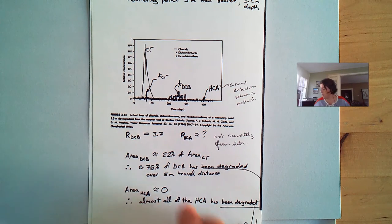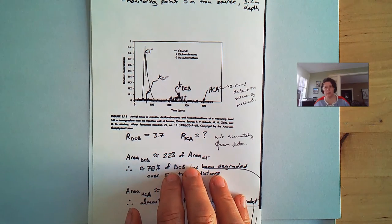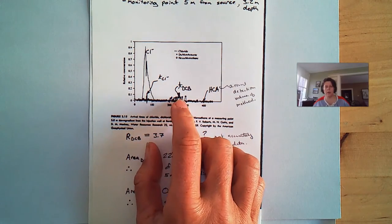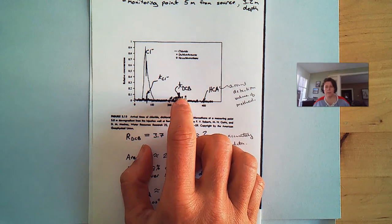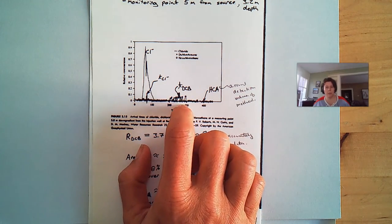And so when we look at these breakthrough curves, we cannot just tell if it's being retarded. We can also look at if it's being biodegraded in the system too, and get some information about the system.